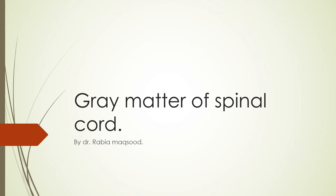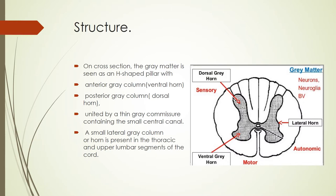Assalamu alaikum. You have studied the gross features of spinal cord and today we will discuss the gray matter of spinal cord. The spinal cord is composed of an inner core of gray matter which is surrounded by a covering of white matter. On cross section, the gray matter is seen as an H-shaped pillar.